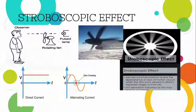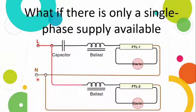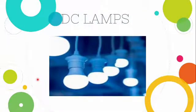To reduce the stroboscopic effect, there are three methods. First, if you use a three-lamp system, connect each lamp to a different phase — R, Y, or B — so they have different zero-crossing periods. Second, if you use a single-phase system, use twin tube lights with a capacitor in series; the capacitor creates a phase displacement between the two lamps, reducing the effect. Third, use DC lamps or LED lamps to eliminate the zero-crossing effect entirely.